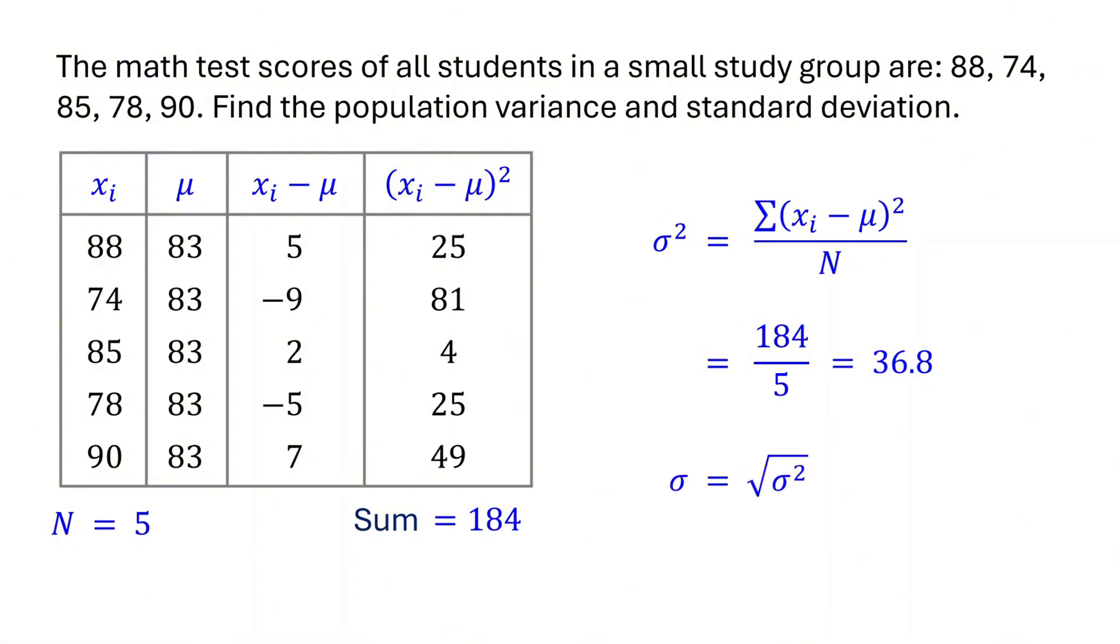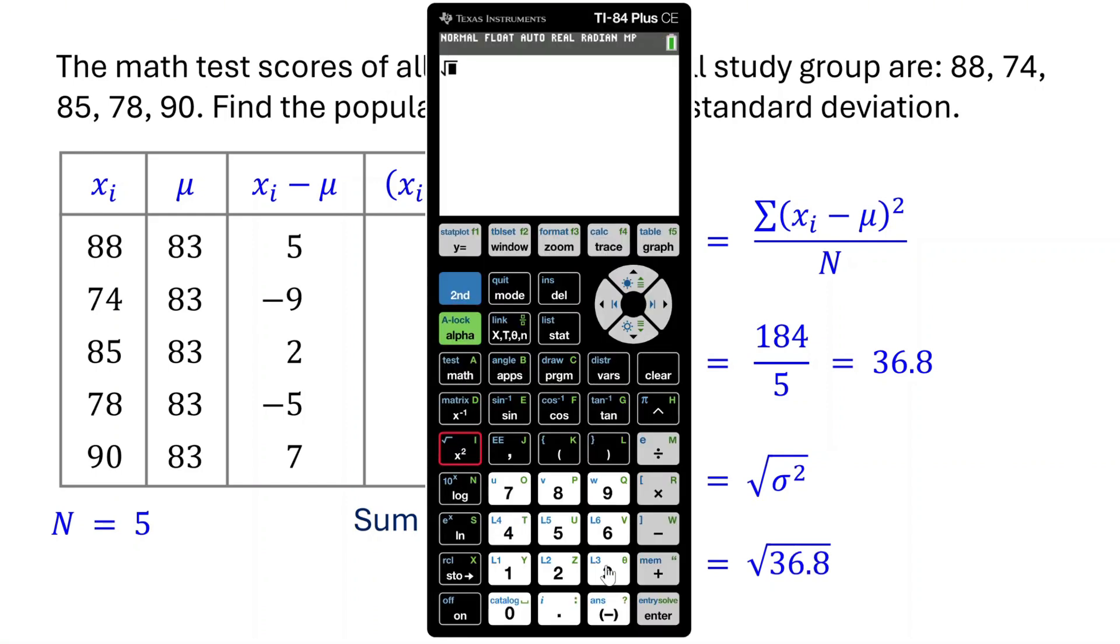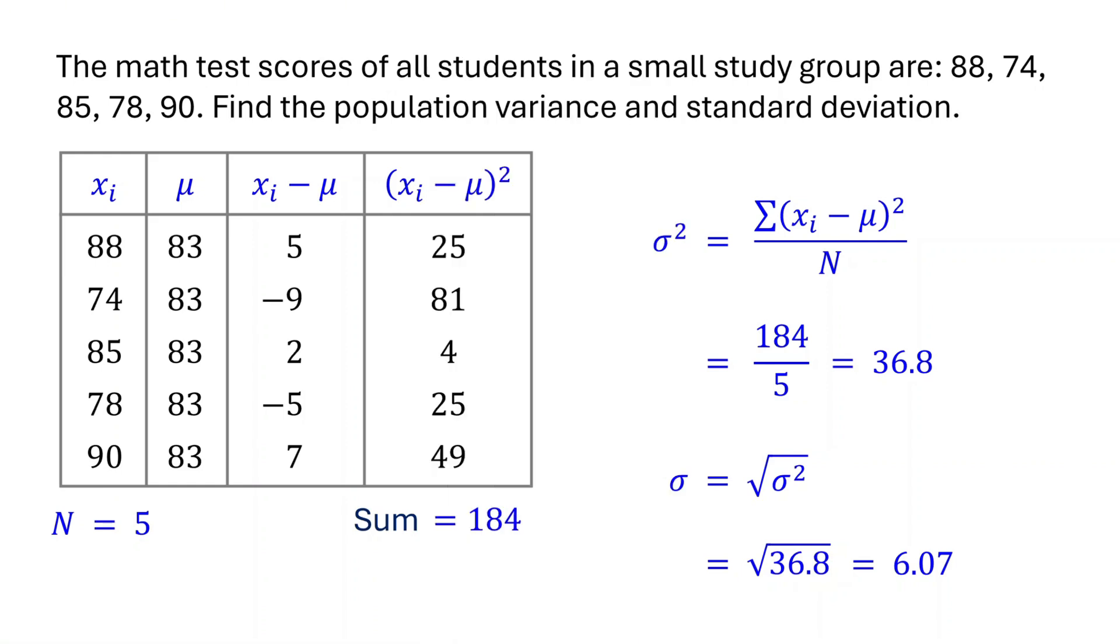Now, to find the population standard deviation, just take the square root of the population variance. The square root of 36.8 is about 6.07 when rounded to the nearest hundredth. So, the population standard deviation is 6.07.